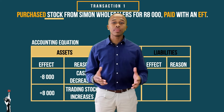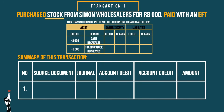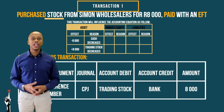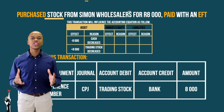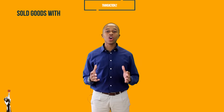Let's look at the summary of this transaction. The source document will be the EFT reference number. The journal will be the cash payments journal, CPJ. As you already know, trading stock will be debited and bank will be credited with the amount of R8,000.